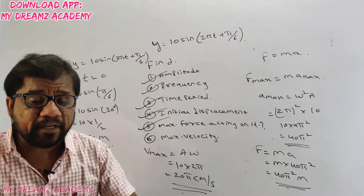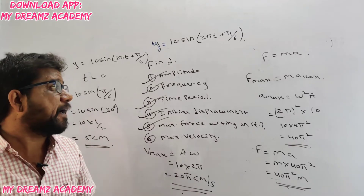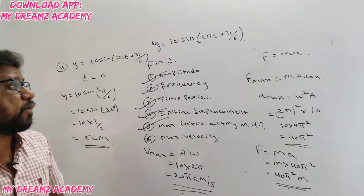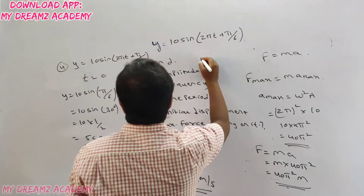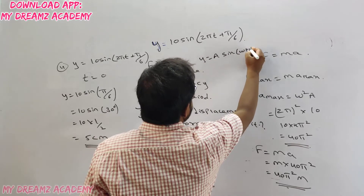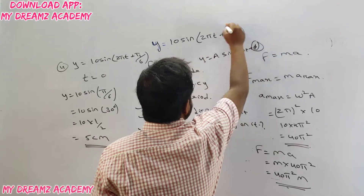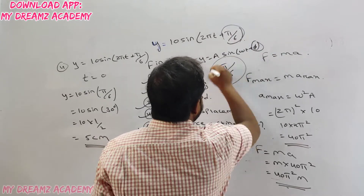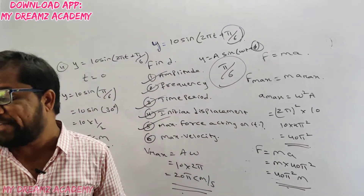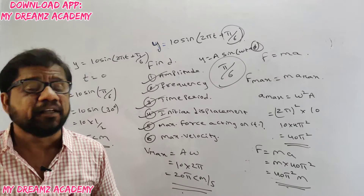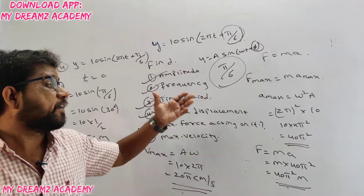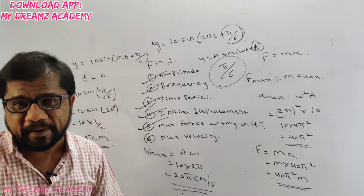The examiner may also ask about phase. From the standard form y = A sin(ωt + φ), the term φ is called phase. In our equation y = 10 sin(2πt + π/6), the phase φ = π/6. This represents the angle difference. These are the six to seven possible questions when an equation is given.